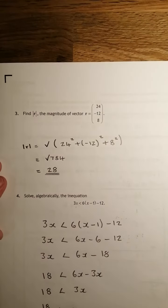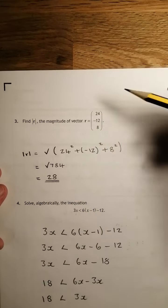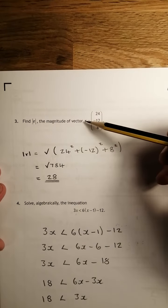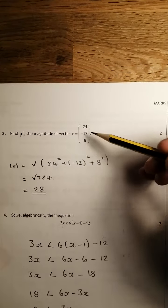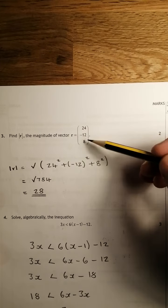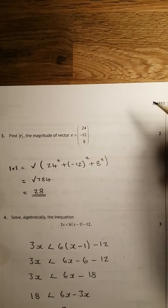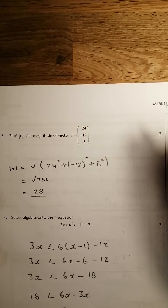Let's look at question 3. Find the length or magnitude of a vector r, given that r is 24 on the x, minus 12 on the y, and 8 on the z.